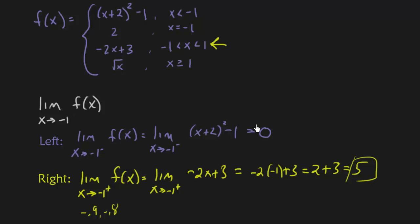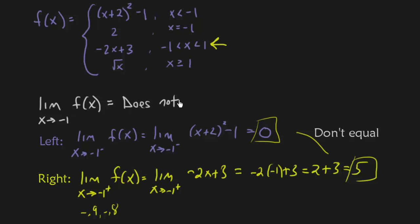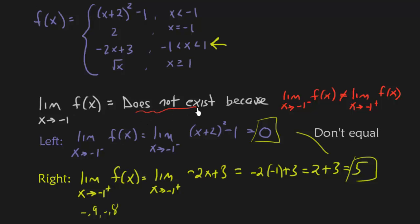So I have a limit of 5 on the right and a limit of 0 on the left. Since these don't equal each other, the general limit does not exist. It's important not only to state that it does not exist, but to back it up: the limit does not exist because the left-hand limit does not equal the right-hand limit.